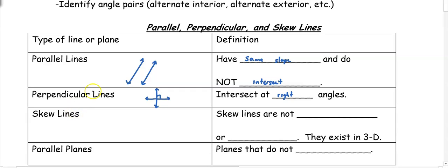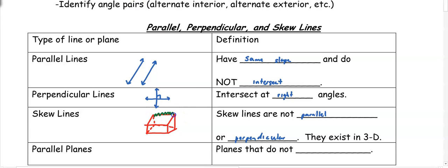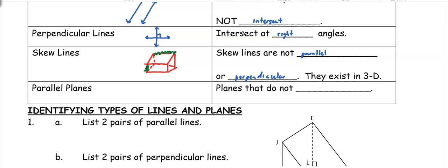Skew lines are not parallel and not perpendicular. They are lines that run in opposite directions in a 3D figure. Think about a cube — skew lines would go in opposite directions. For example, a back line going left to right and a front side going up or down; they're never going to intersect, but they're also not parallel and not perpendicular. Parallel planes are sides of a three-dimensional figure that are never going to intersect.